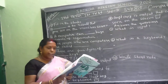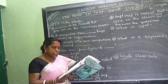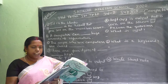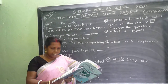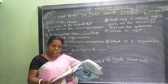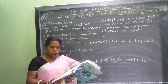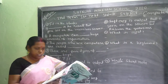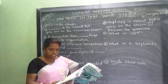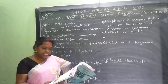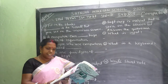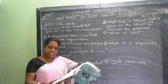Look at the picture shown alongside. In it, the lady is putting fruits into a mixer to make fruit juice. The mixer will mix and grind all the fruits along with the spices, sugar, water, etc., which the lady has put into the mixer, and thus the fruit juice will be ready.